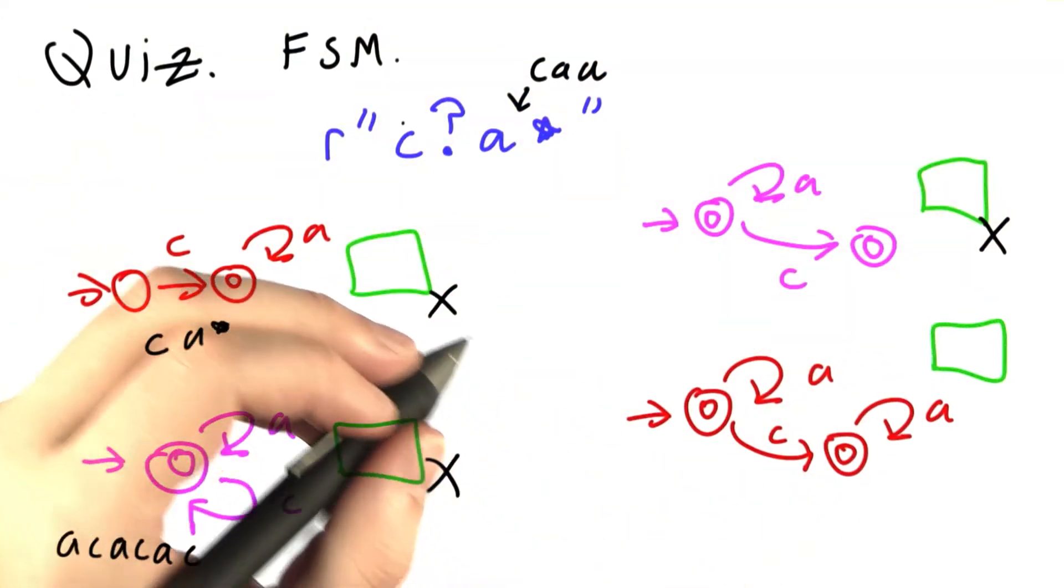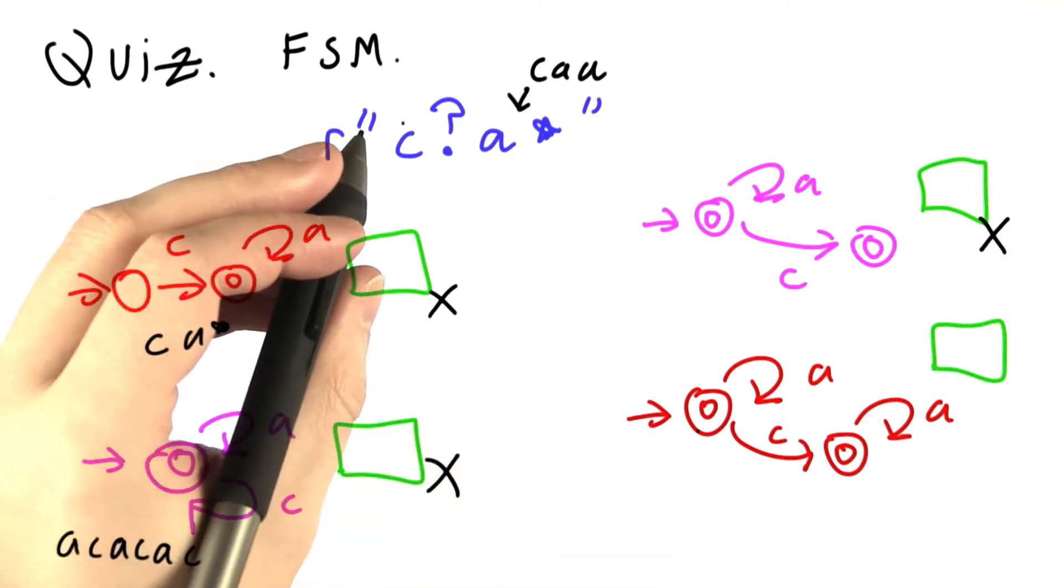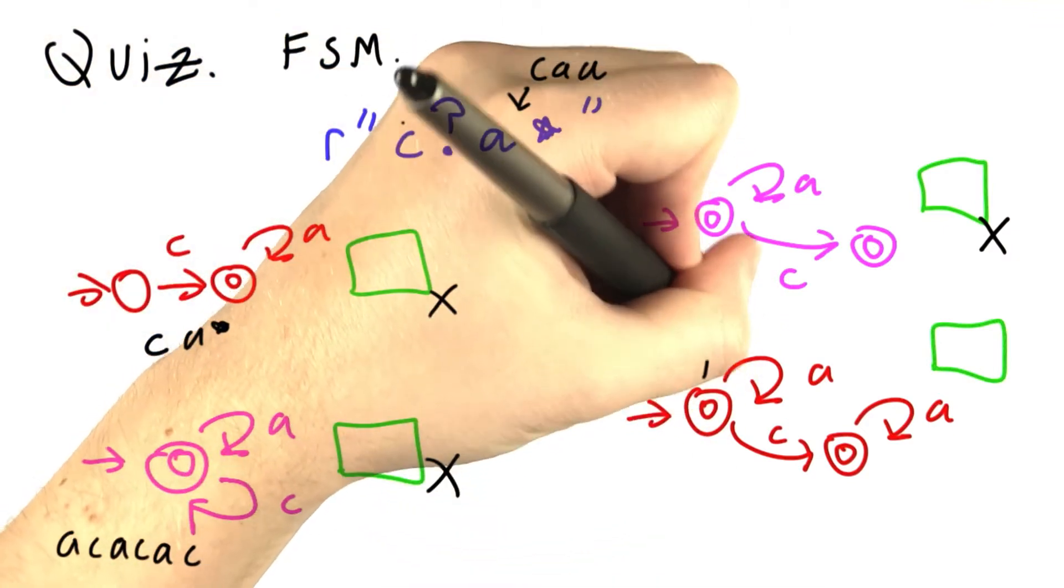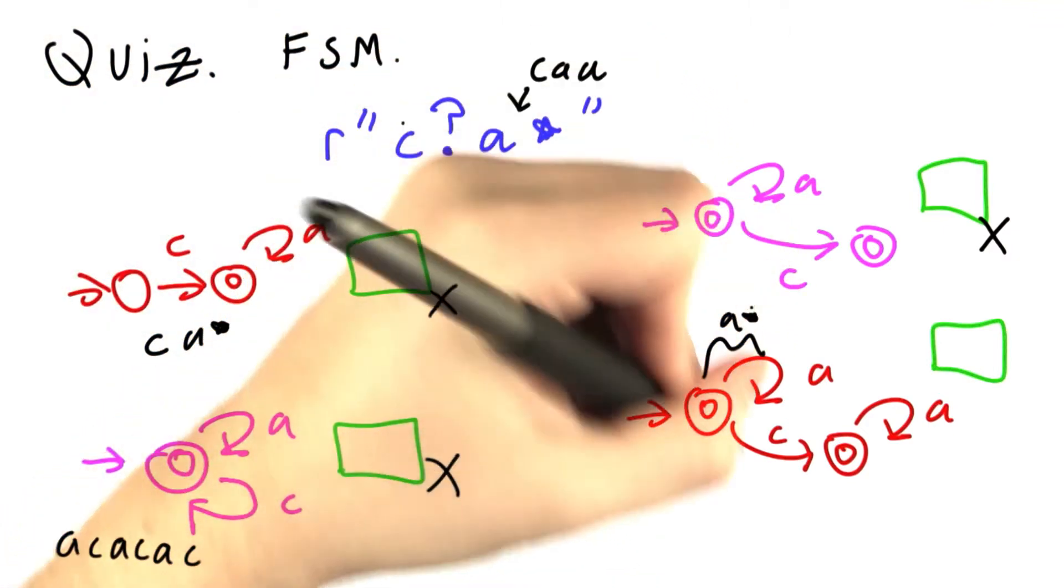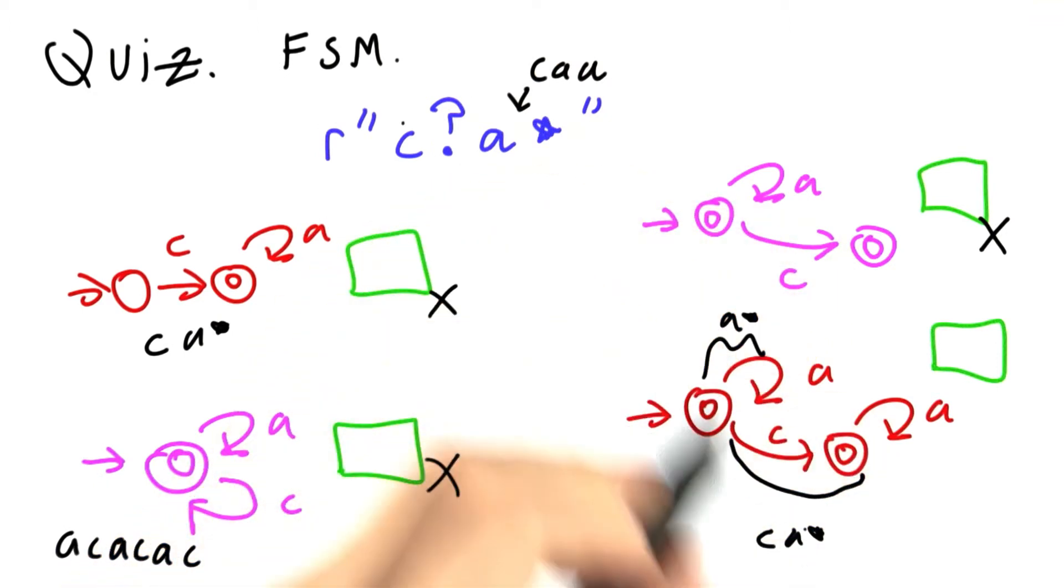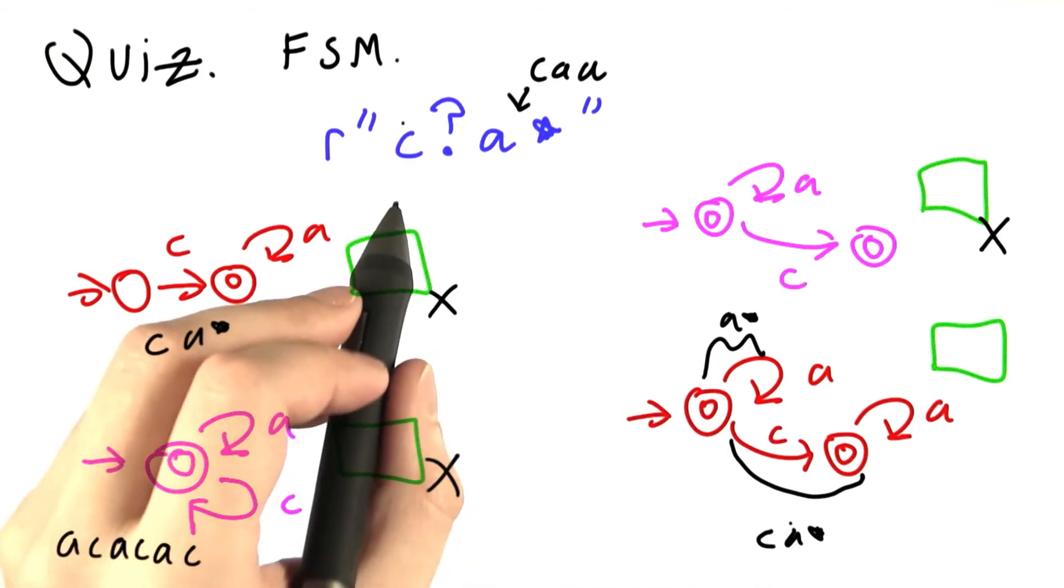So either I'm super evil, or this last one's the winner. And it turns out that the last one is the winner. And essentially up here we have a star, and down here we have c a star. When I put these two paths together I get optional c, followed by a star.